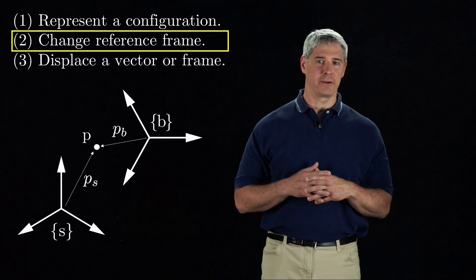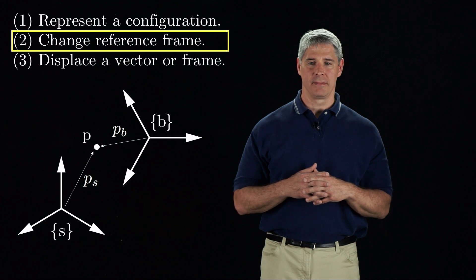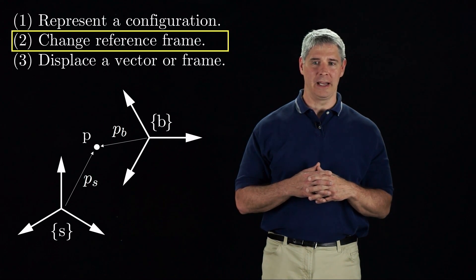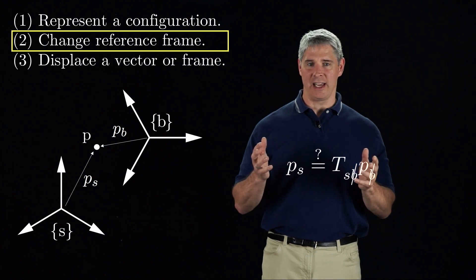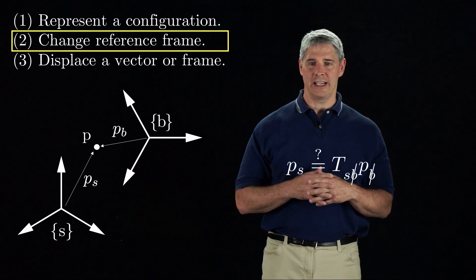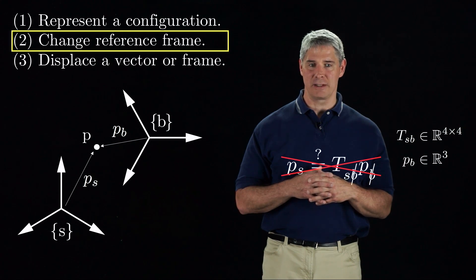We can also change the frame of reference for a point P in space. Let PB and PS be the representations of the point in the B and S frames. We could naively try our subscript cancellation rule again, but this doesn't work. TSB and PB have a dimension mismatch.